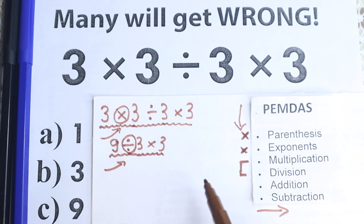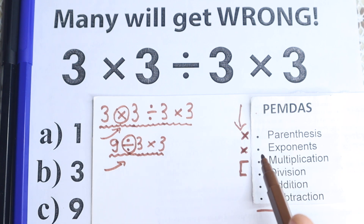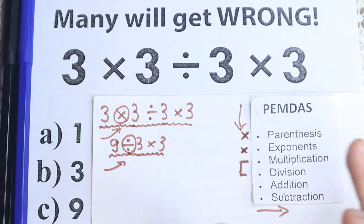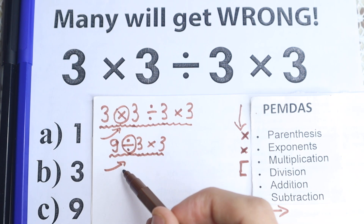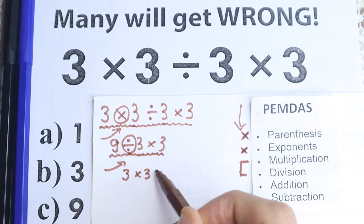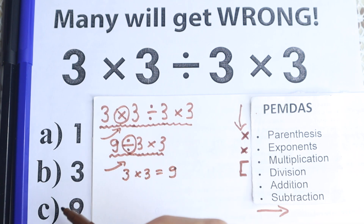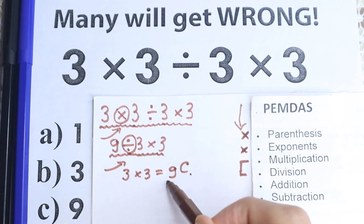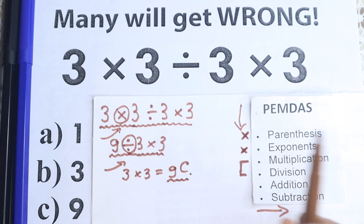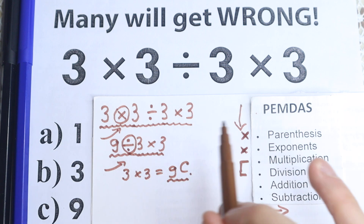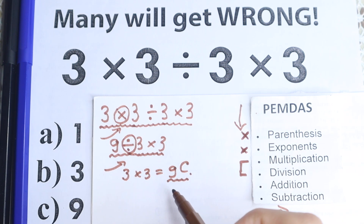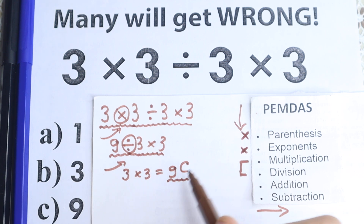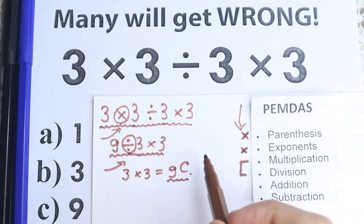As you can see, we solved division before multiplication here, and multiplication before division there — it all depends on which sign appears first from left to right. If you're talking about PEMDAS, of course — because other orders like BODMAS solve it differently. So: 9 divided by 3 equals 3, and 3 times 3 equals 9. According to PEMDAS, the correct answer is option C.